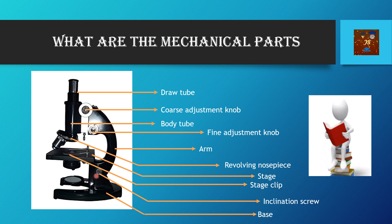You can see this is the stage, this is the stage clip, this is the inclination screw or inclination knob, and the last one is the base. So these are the mechanical parts of a compound microscope.